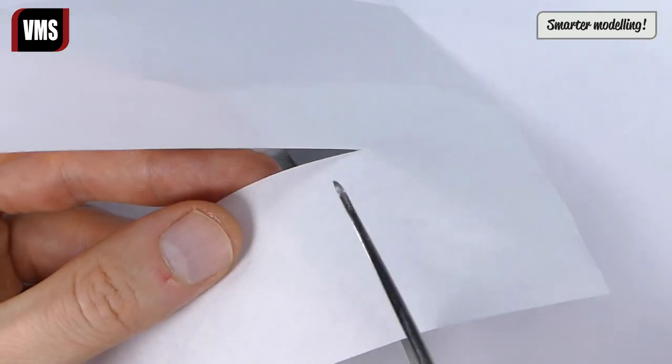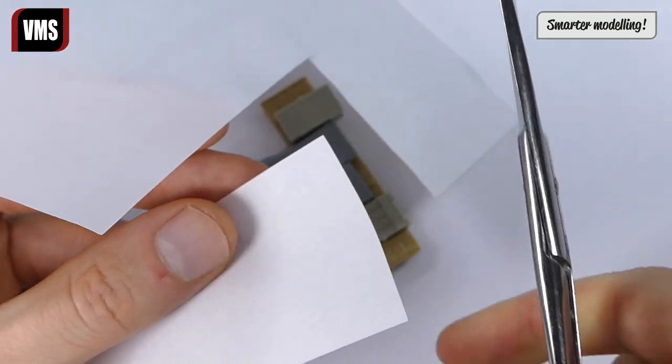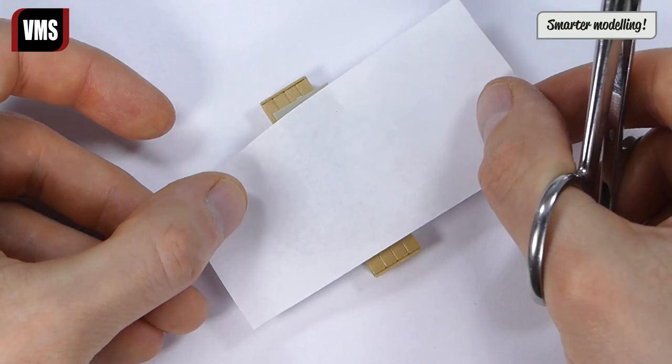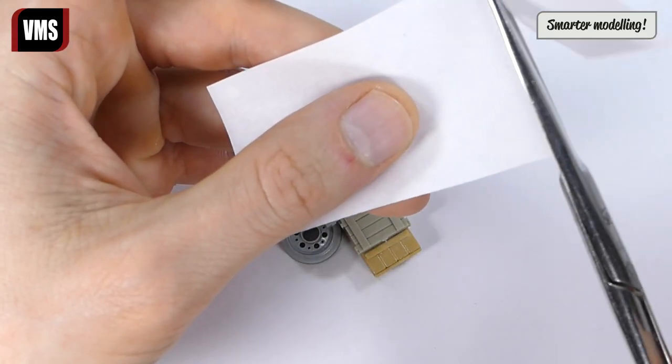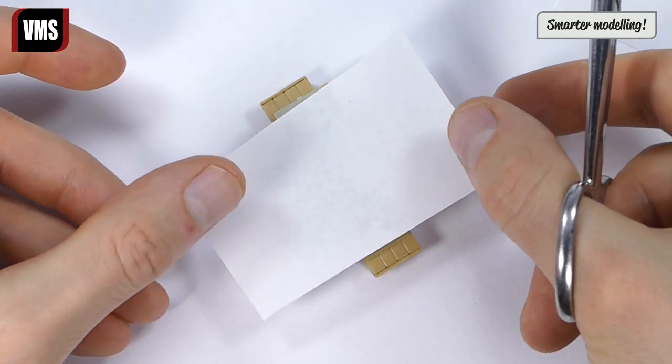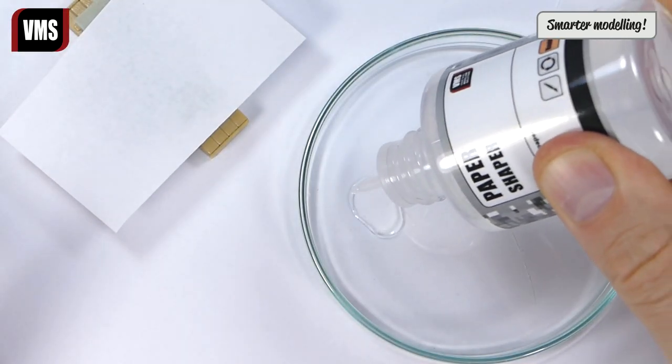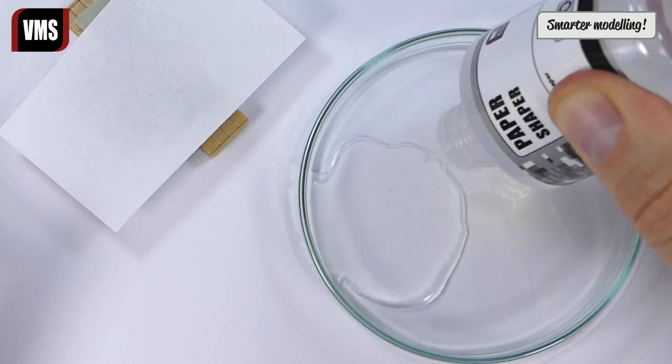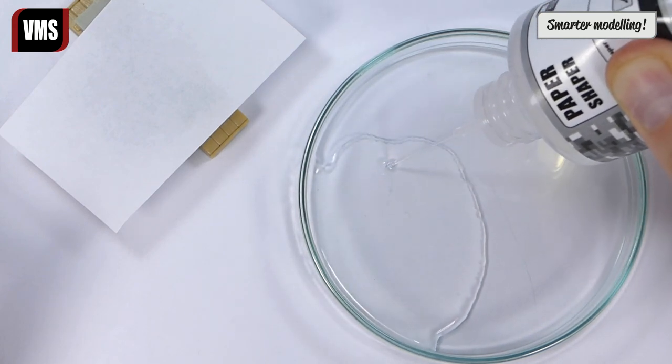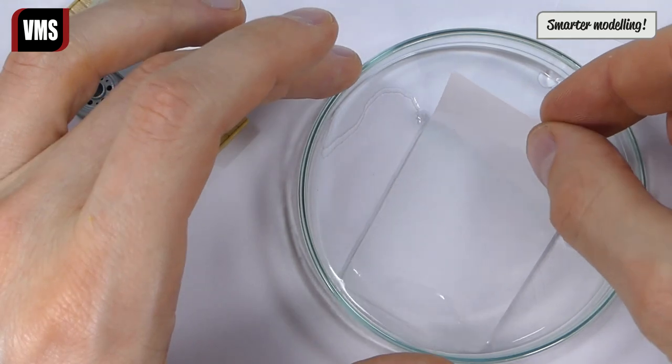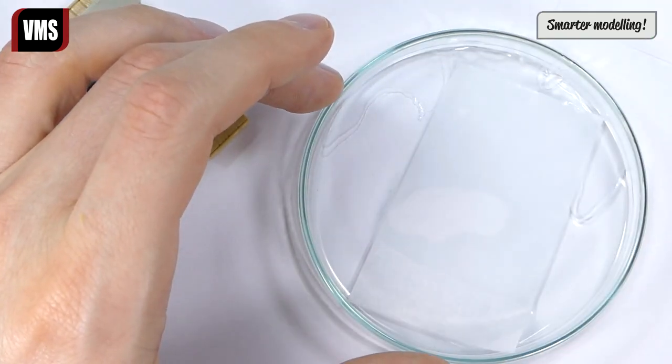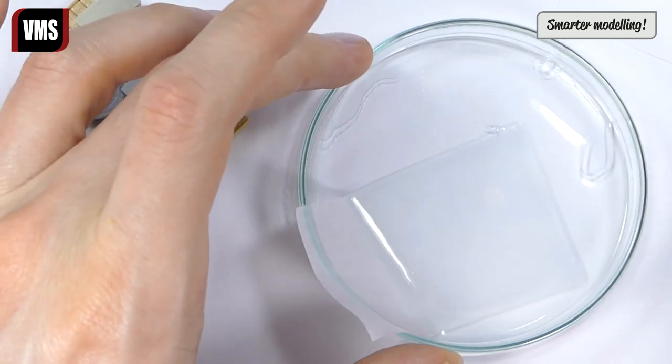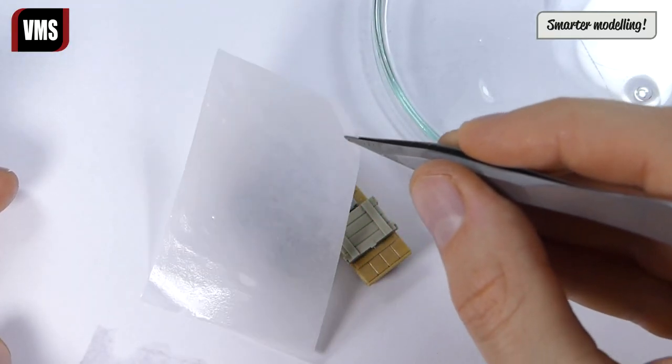Cut a piece big enough to envelop your target model part—in this case some crates and spare road wheels. Dispense some VMS paper shaper, let the paper absorb the fluid, then place the soaked paper on the part.